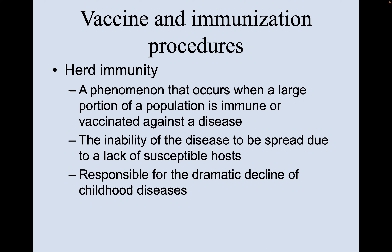For newborn babies who can't be vaccinated right away, or someone who's had bone marrow cancer and lost all their immunity from prior vaccinations, those people are susceptible to polio. But we can protect them through herd immunity if the rest of us are vaccinated and polio is not circulating in our population. Herd immunity is a gift we can give to others who can't be vaccinated.